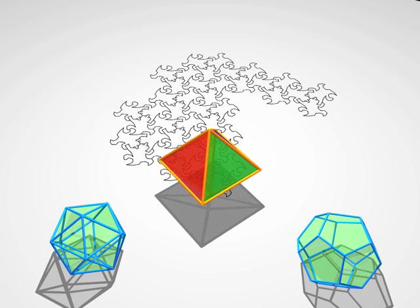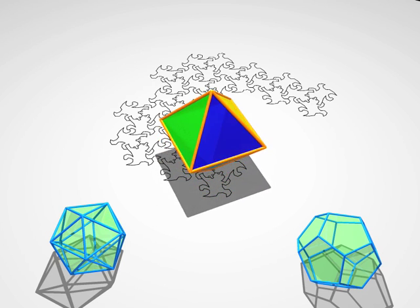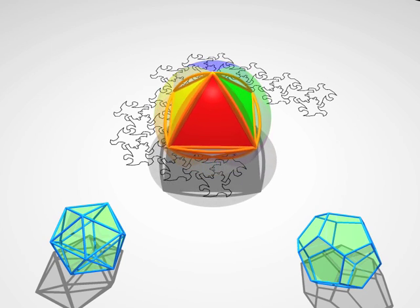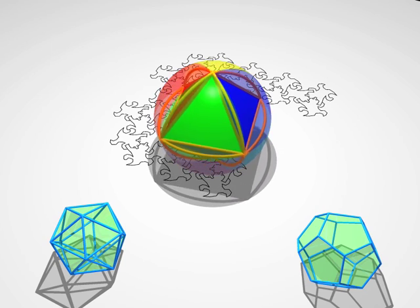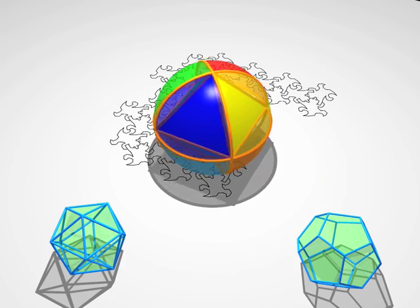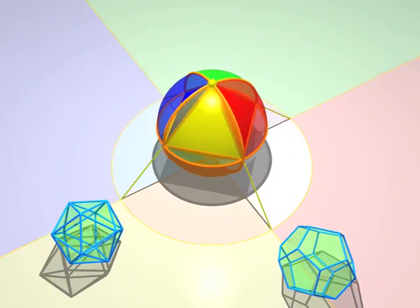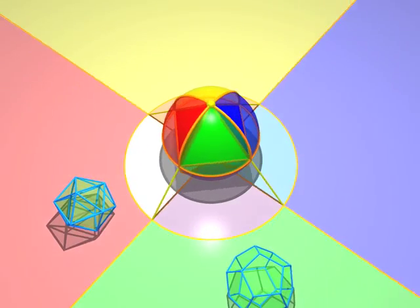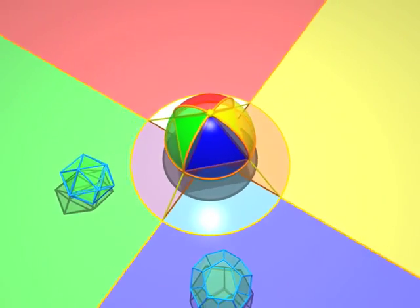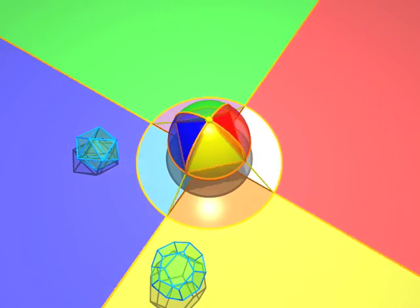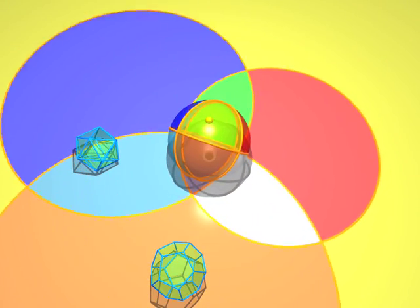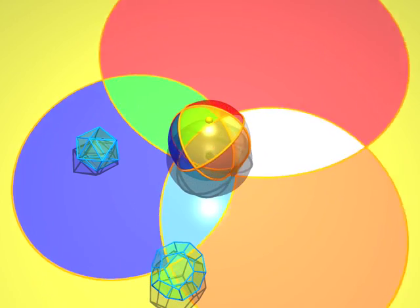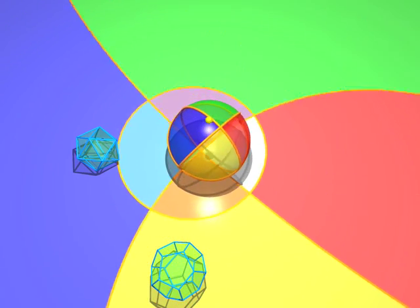And now, here comes an octahedron. You see the eight colored faces? Look how the projections of the edges are arcs of circles.